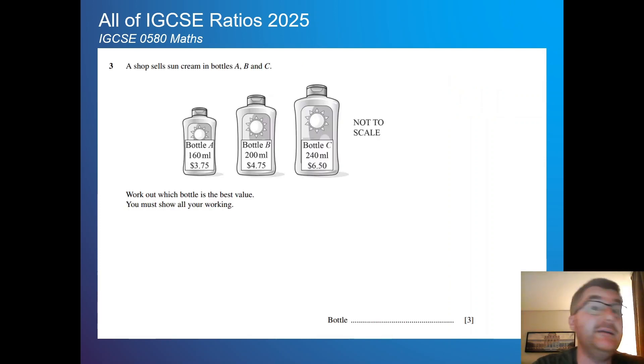Question 3, completely different kind of question. So a shop here sells sun cream in bottles A, B, and C. We've got bottle A, 160 milliliters at $3.75 and B and C, and so on. Work out which is the best value. This kind of question does come up from time to time. The way I generally structure this is I have A, B, and C. And I take the amount of money, so $3.75, and I'm going to divide that by 160.